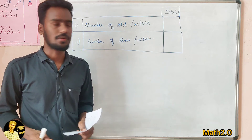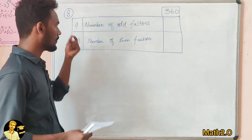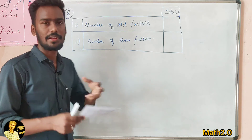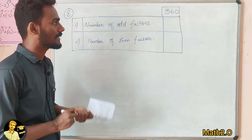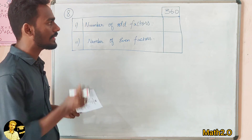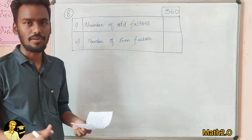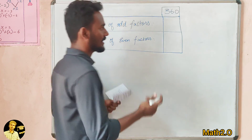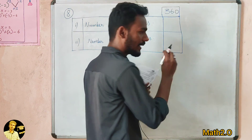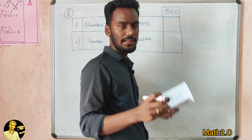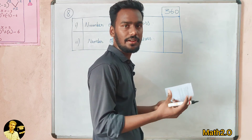The number of odd factors is 360. To find out the number of odd factors, we will first look at 360. What do you think about 360 factors? We will express it in terms of prime numbers — that is, prime factorization.